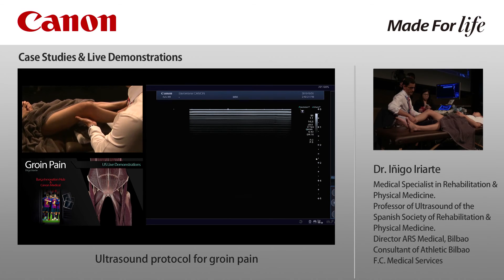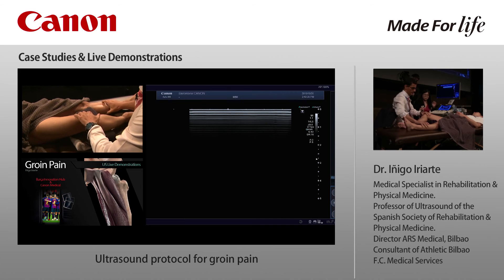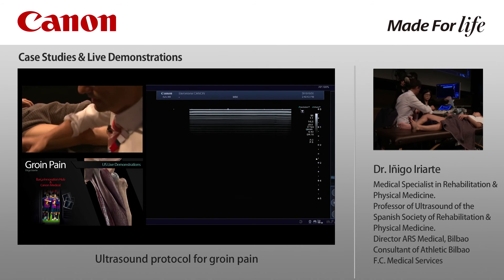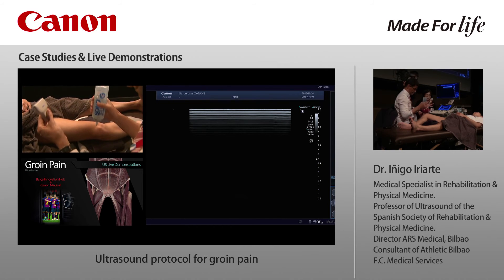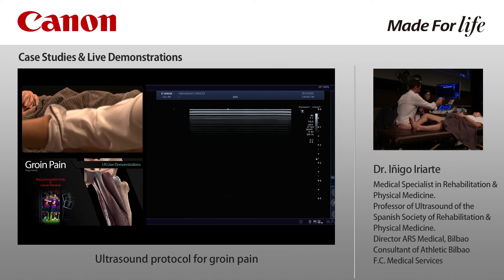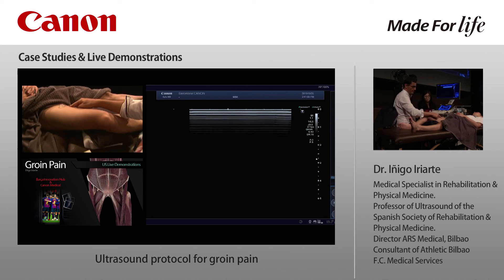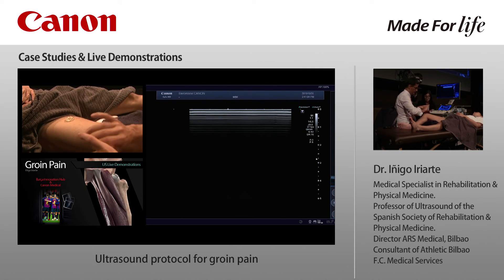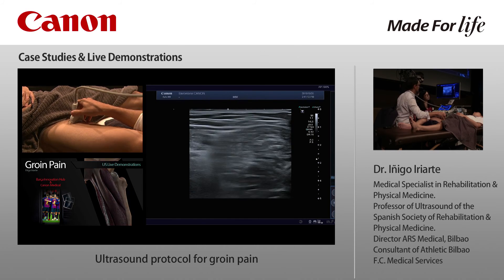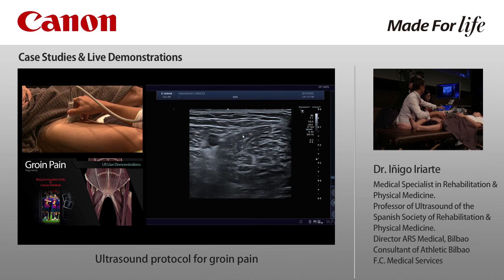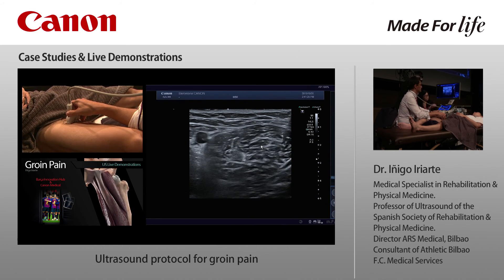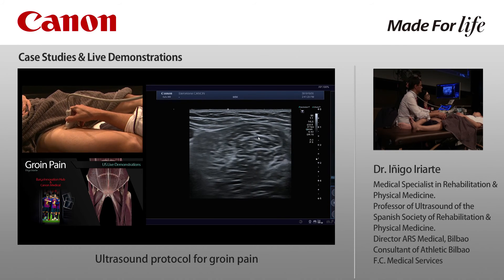We will place the patient with the lower limb externally rotated to have better access to this area. I usually use a wider probe because I have a better view of all these muscles. We have here a muscle — this will be the adductor longus. If I place the probe in short axis over this muscle, we will notice this round-shaped muscle. This is the adductor longus. You can see here this tendon inside the muscle, which is the adductor longus tendon.